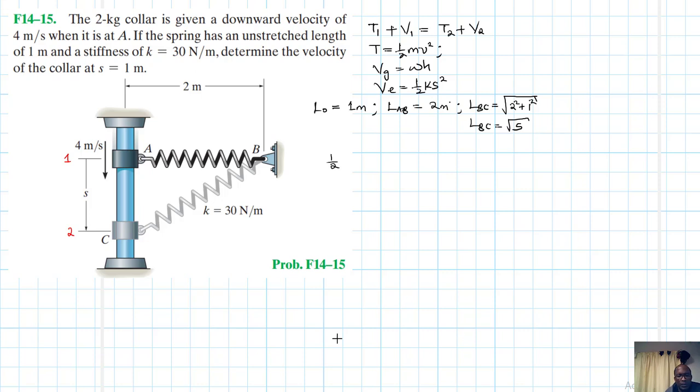So this is our datum here. So we have half m v1 squared plus w h1 plus half k s1 squared. And this is equal to half m v2 squared minus w h2 plus half k s2 squared.